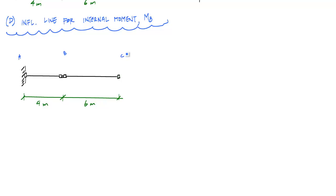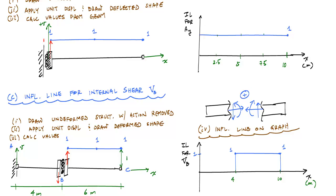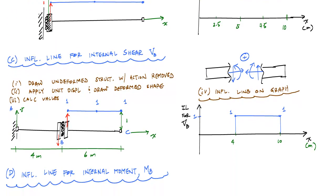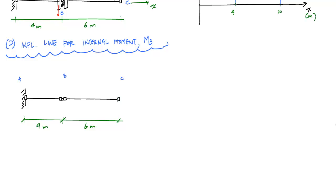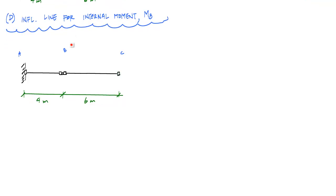And again, here, after we've drawn the structure with the action removed, we want to go and introduce a rotation, a unit rotation, because we're removing a moment. And here we see that these arrows, the internal positive moment sign convention, help us determine the directions of rotation.